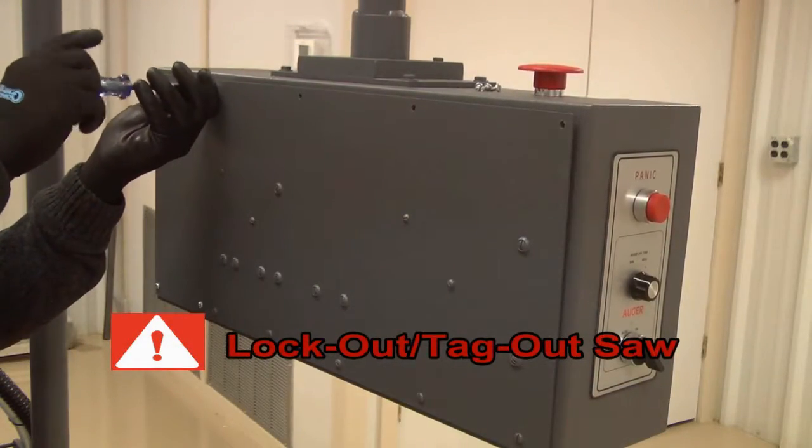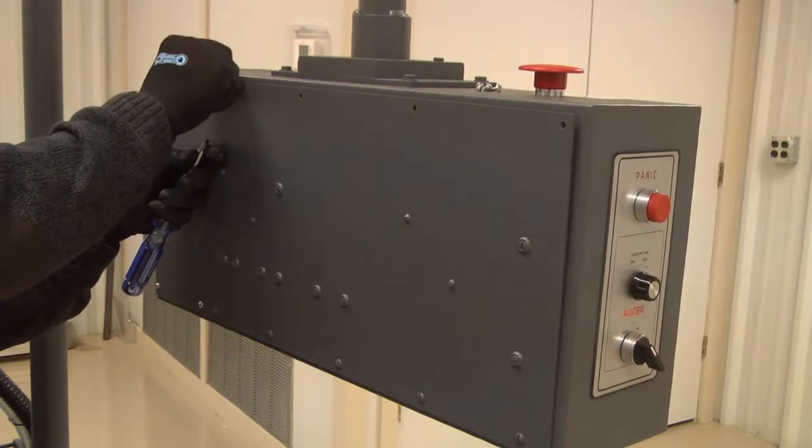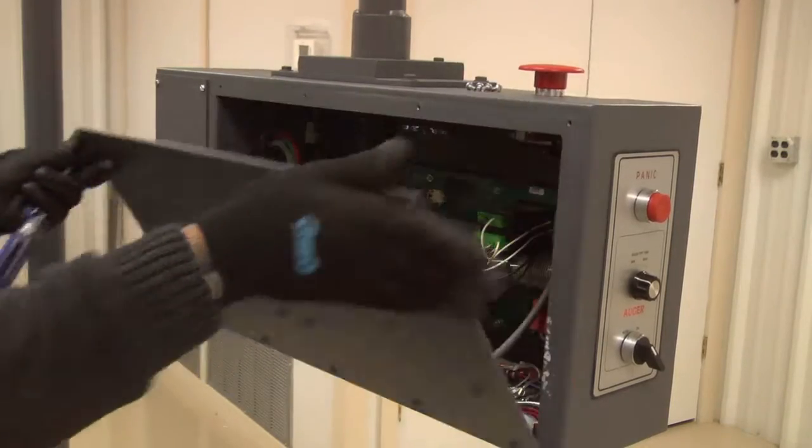While the saw is in the lockout tagout state, the hinged cover on the back of the control panel can be opened to view the diagnostic switches.